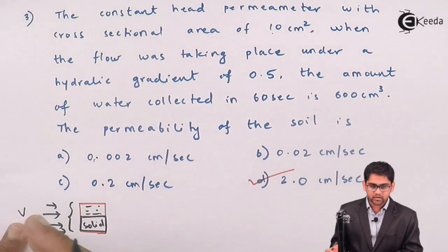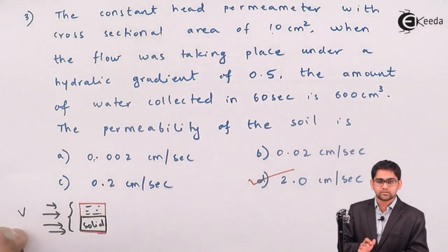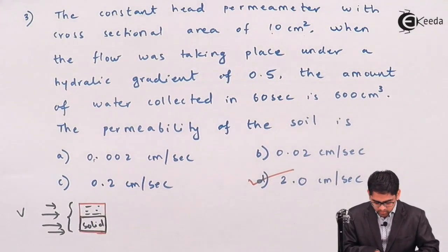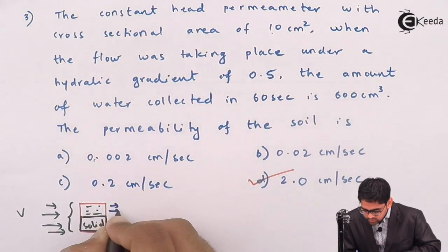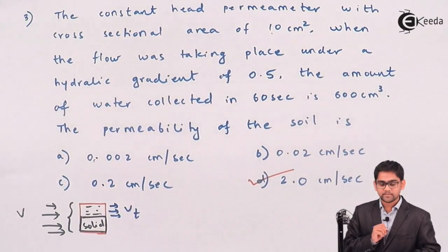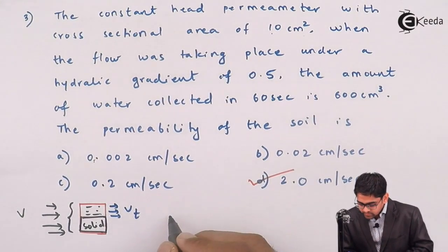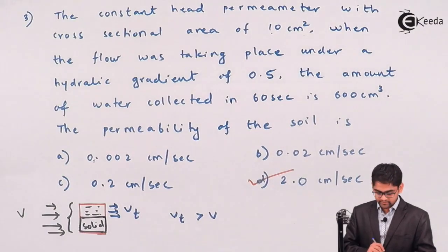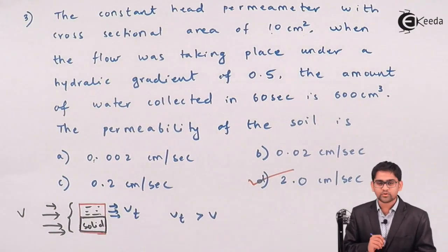Obviously, for our case, we define it as just the velocity V. But the true velocity will be occurring within the pores, and we denoted it by Vt. And we have also seen that Vt is greater than the superficial velocity V. V over here is superficial velocity.